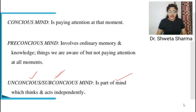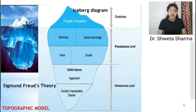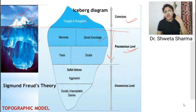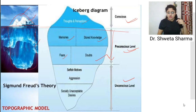The unconscious mind is a part of the mind which thinks and acts independently. Basically, 90 percent of the mind is invisible — like underwater — and 10 percent is above the water, which is the conscious part. Thoughts and perceptions are at the conscious level; stored knowledge, memories, and fears are at the pre-conscious level; and selfish motives, aggression, and socially unacceptable desires are at the unconscious level.